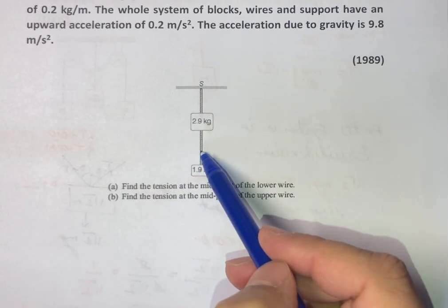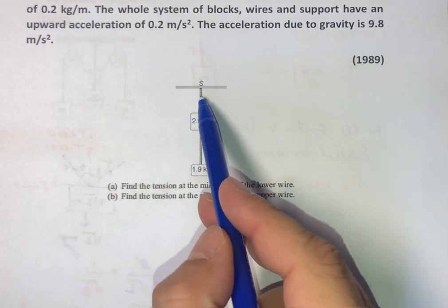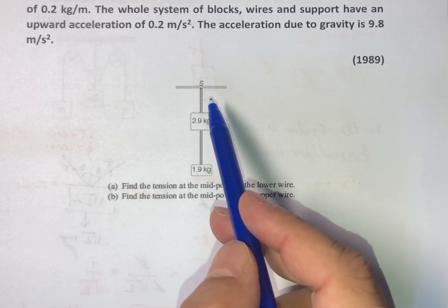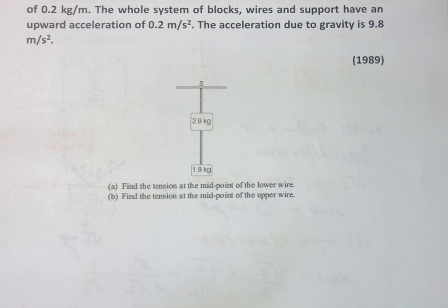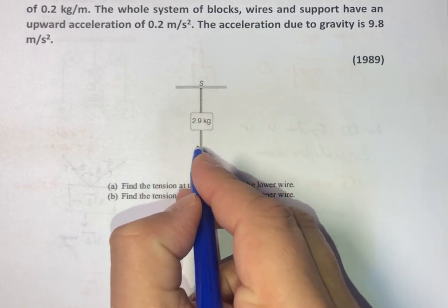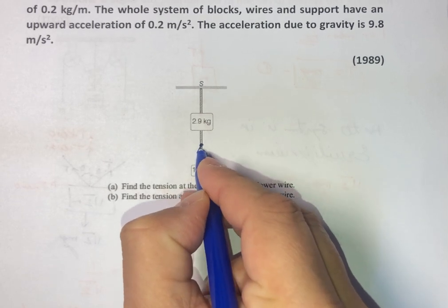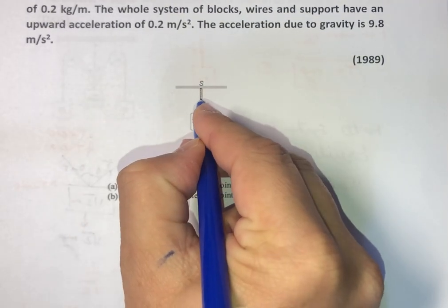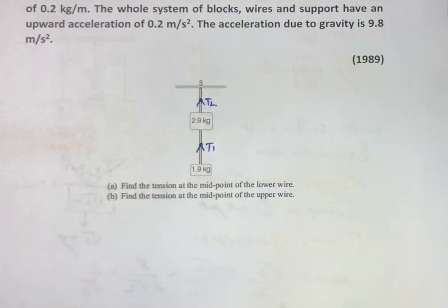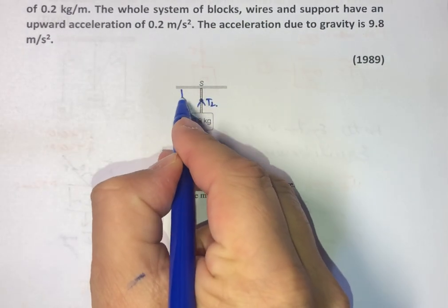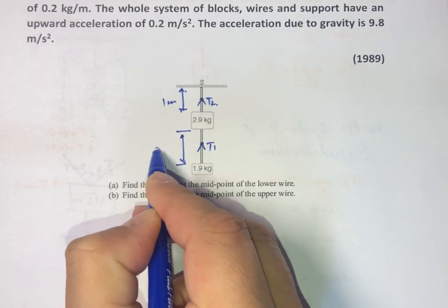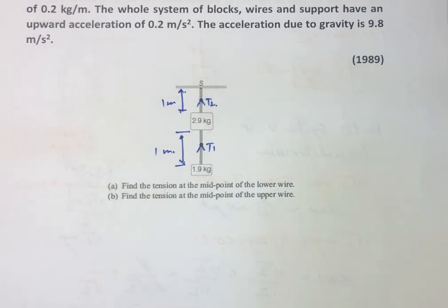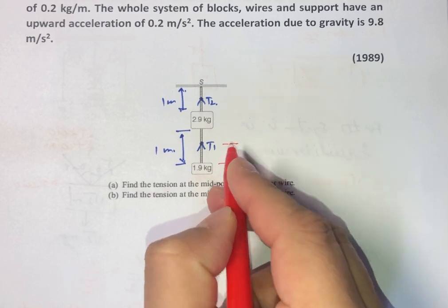The lower wire has a mass per unit length of 0.2 kg/m and the upper wire is massless. The entire system is moving upward with an acceleration of 0.2 m/s² and the length of each wire is 1 meter. Since each wire is 1 meter long, the midpoint of each wire is at a distance of 0.5 meter from either end.